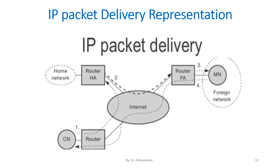The IP packet delivery representation is shown here. In this diagram, we have the home network, foreign network, mobile node, and correspondent node. The home network is connected to the internet through the router. Similarly, the foreign network and the correspondent node are each connected to the internet through their respective routers, as indicated in this diagram.